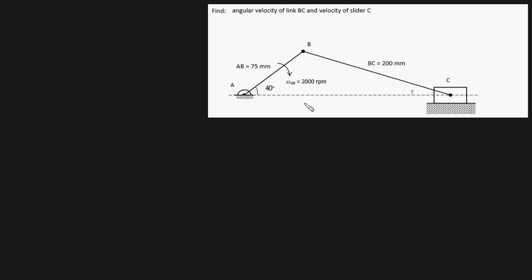Hey guys, in this video I plan to help you solve a fairly challenging relative motion problem. This is our assembly, and we're asked to find the angular velocity of link BC and also the velocity of the slider C. Don't forget that the velocity refers to both direction and magnitude. This slider is forced to move in purely a horizontal direction.